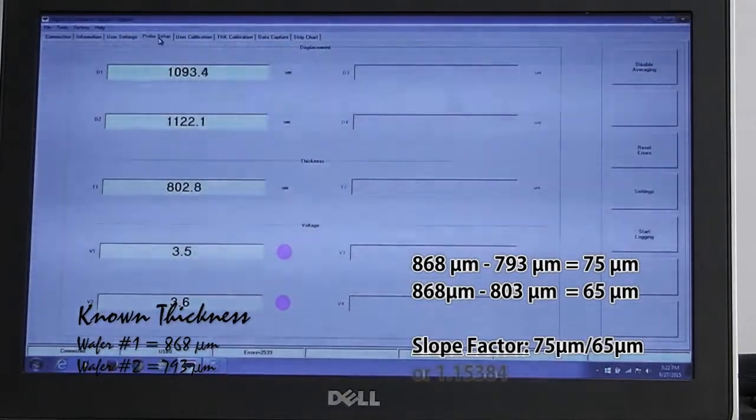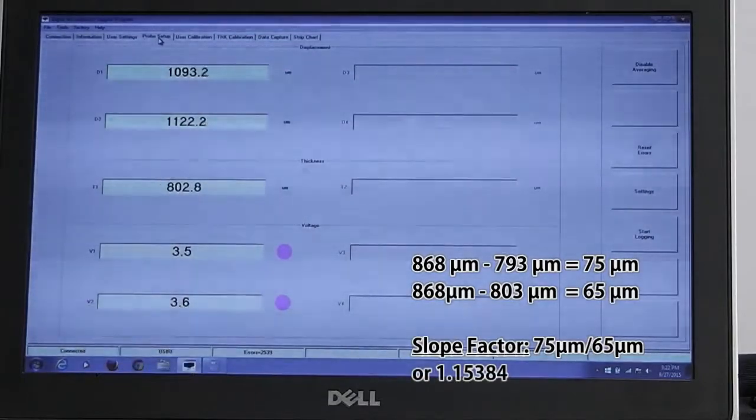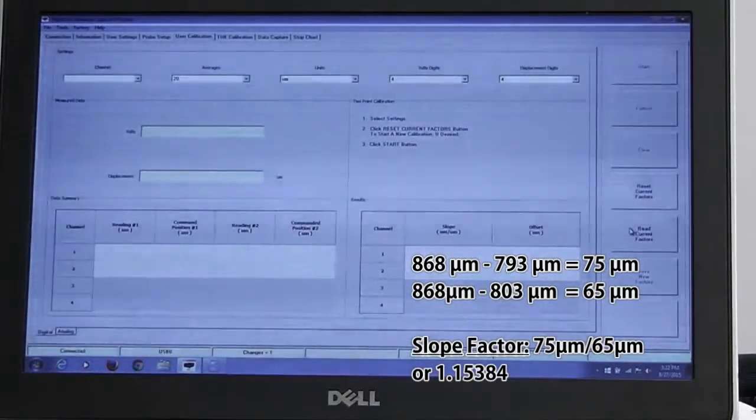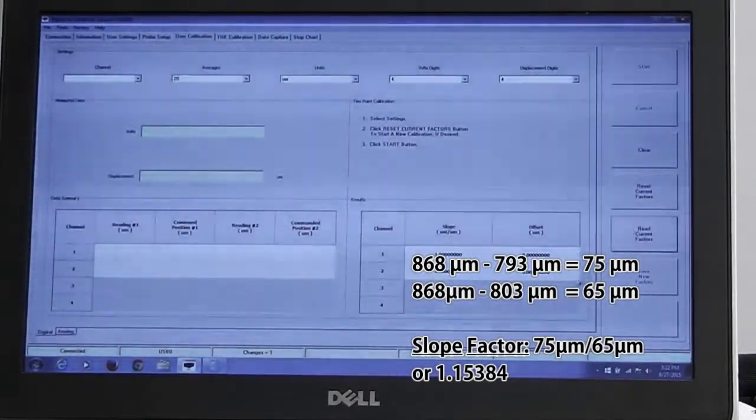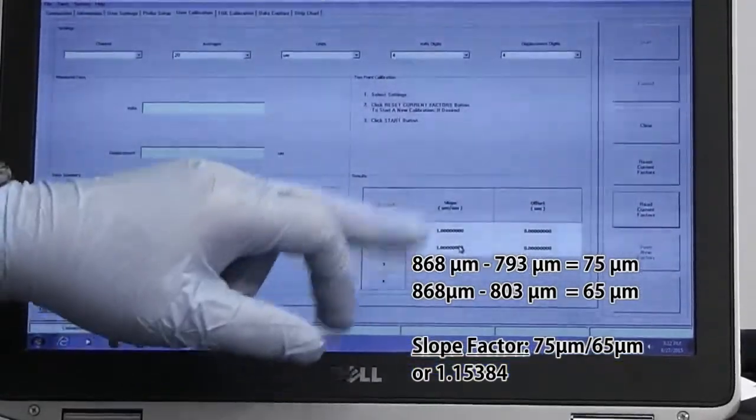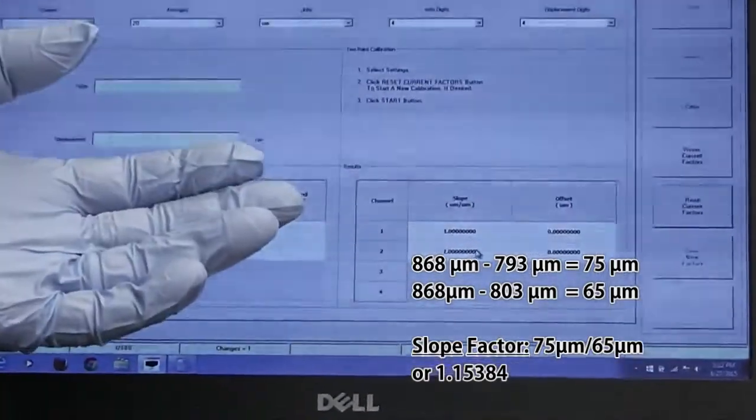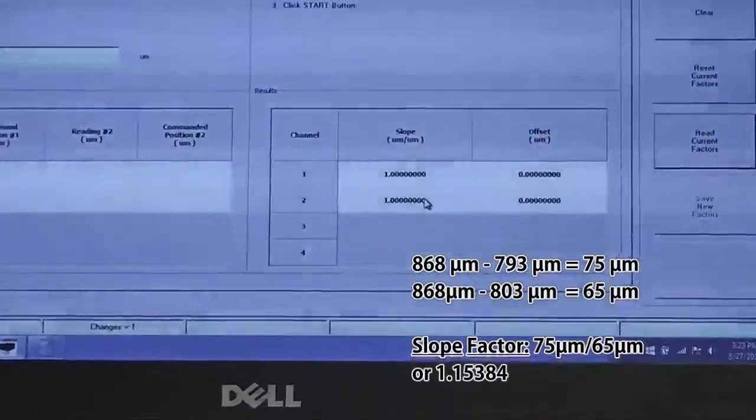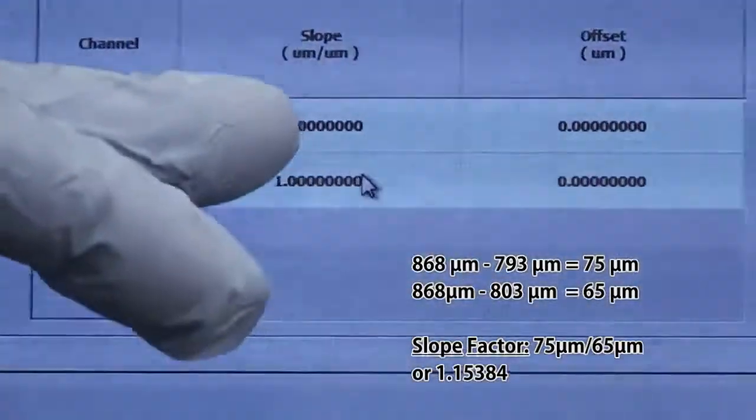In this case, I've already done that and we know that the slope factor for sapphire is 1.15384. So the next thing we're going to do is we're going to go to user calibration window. We're going to read the current slope factor which is 1 from our original calibration when the unit was calibrated in MTI. And our slope and offset is 1 and 0.